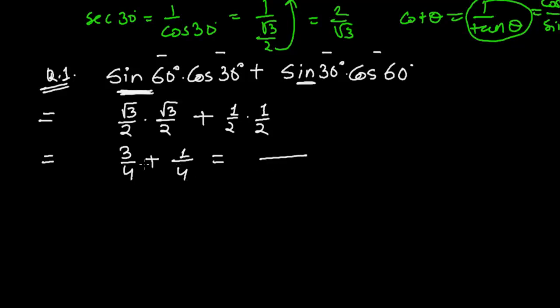I have to take the LCM. The LCM of 4 and 4 is simply 4, so 3 plus 1 equals 4 upon 4. 4 divided by 4 is 1, so our answer is 1.